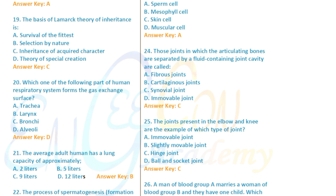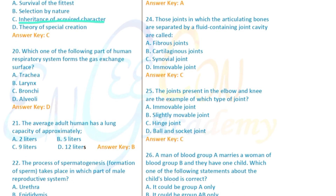The basis of Lamarck's theory is the inheritance of acquired characteristics — option C is ticked. Question 20: Which part of the human digestive system forms the gas exchange surface? The answer is the alveoli.